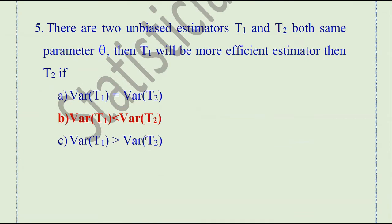Question number 5. There are two unbiased estimators t1 and t2 for the same parameter theta. Then t1 will be more efficient than t2 if the variance of t1 is less than the variance of t2. In such a condition, t1 will be more efficient than t2.